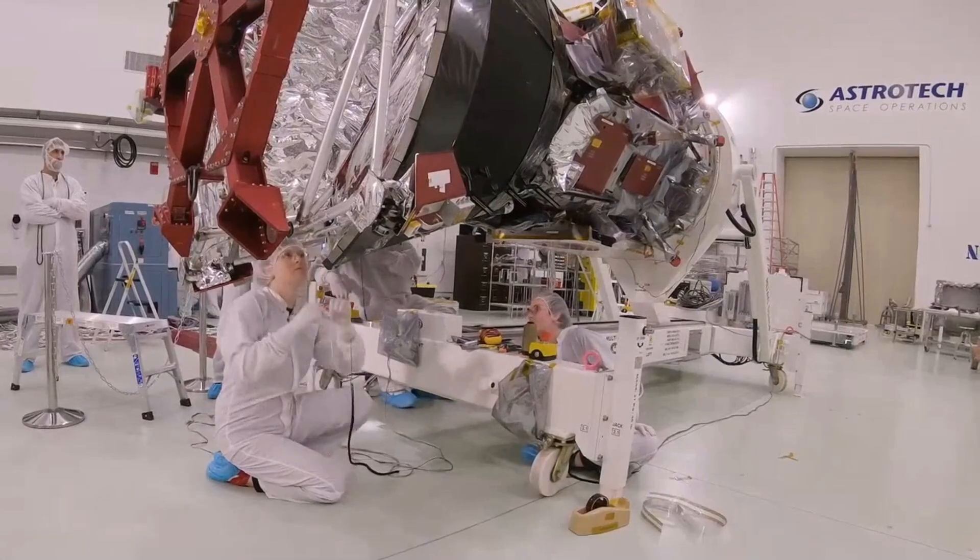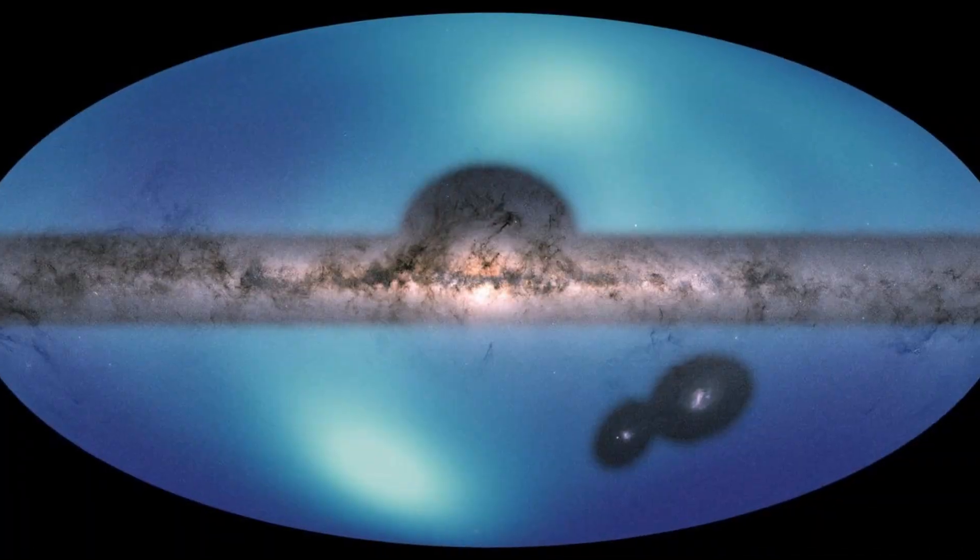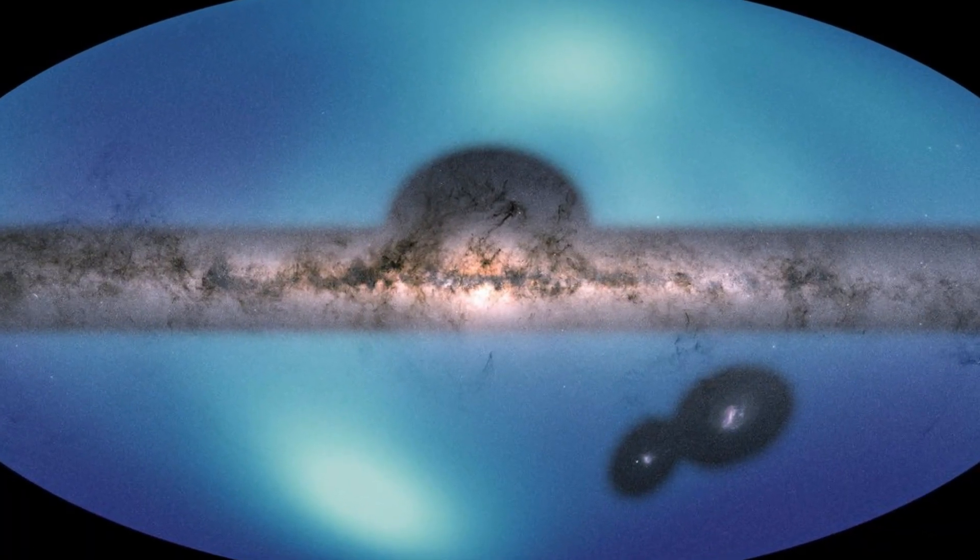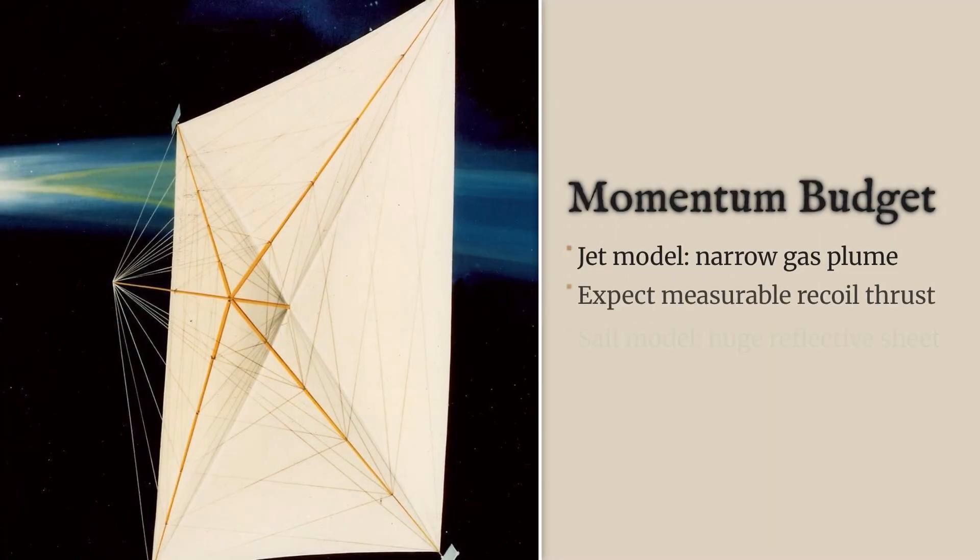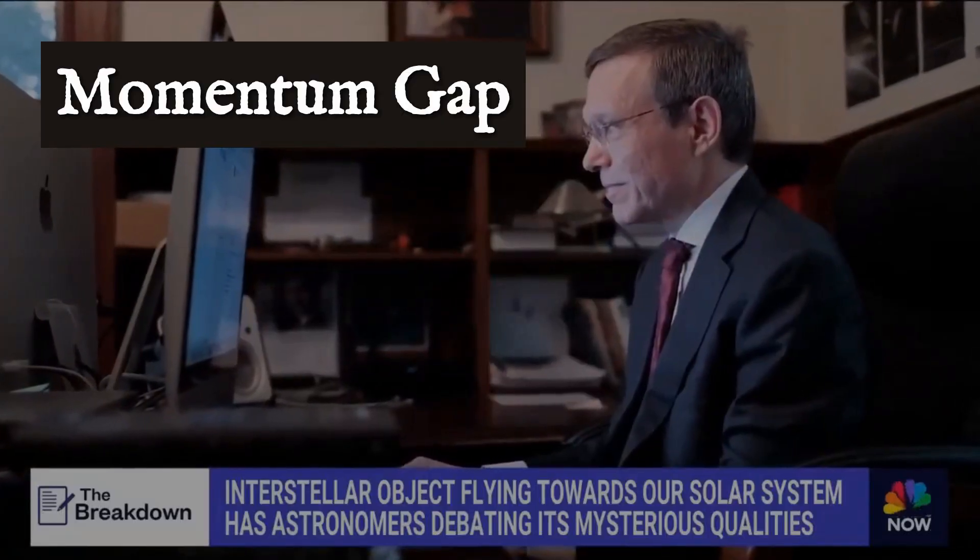If a sail or ultra-thin sheet existed, it would either reflect sunlight or glow in infrared, but neither signal appears. Both scenarios predict clear observable effects, a plume or tail for jets, or a vast lightweight structure for sunlight. So far, neither fits the evidence.